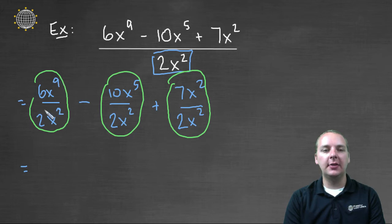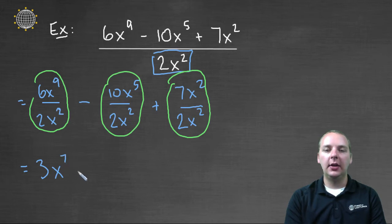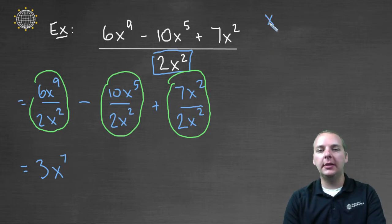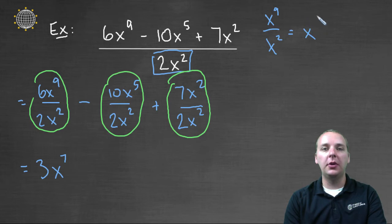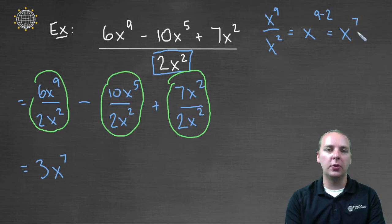Six x to the ninth divided by two x squared. Well six divided by two is three. And x to the ninth divided by x to the second would be x to the seventh. And the way that I know that is x to the ninth divided by x to the second, if you have the same base here with different exponents, as we probably know, you can subtract these exponents. So x to the nine minus two would be x to the seventh of course.